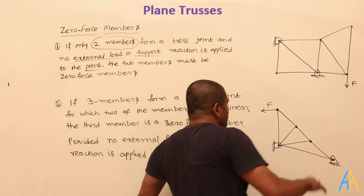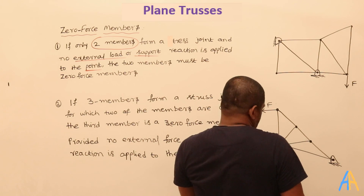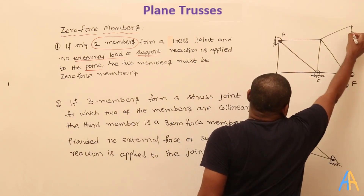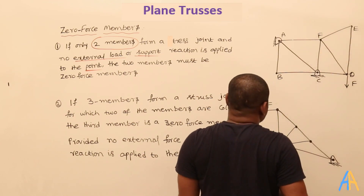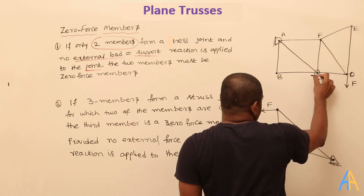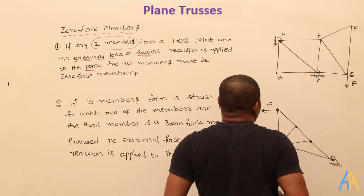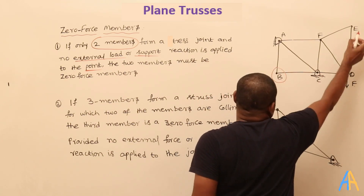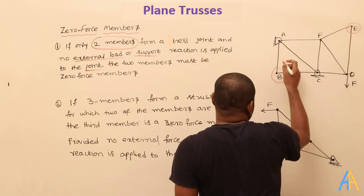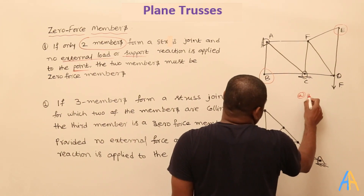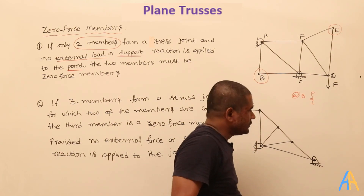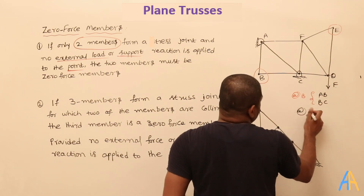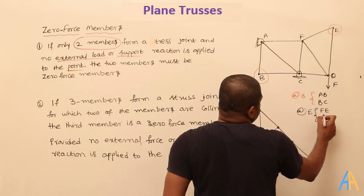Consider this example. We have a truss with joints named A, B, C, D, G, F. A force is applied at one junction, and there are reaction forces at C and A. Now identify the junctions which have only two members. Junction B has only two members — AB and BC — and junction E also has only two members — FE and ED.